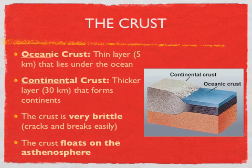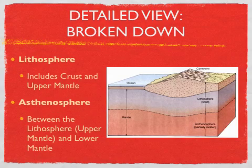The crust also floats on the asthenosphere. In this image, you can see how the continental and oceanic crust kind of floats on the asthenosphere, which is partially melted. The lithosphere, which is the middle layer, includes both the crust and the upper mantle. Do you see how the arrow extends all the way up to the mountain and goes down to the asthenosphere? All of that area includes the lithosphere.